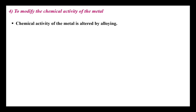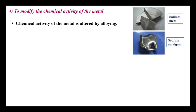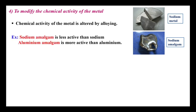The fourth point of significance is to modify the chemical activity of the metal. By making an alloy we are modifying physical, chemical, and mechanical properties so the metal can be used for more purposes. For example, sodium metal converted to sodium amalgam — which has mercury as a constituent element — is less chemically active than pure sodium metal. Conversely, aluminium amalgam is more active than pure aluminium. So the alloying process can modify chemical activity to either more or less activity depending on the requirement.